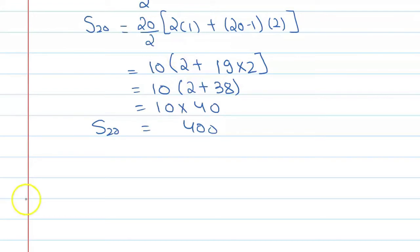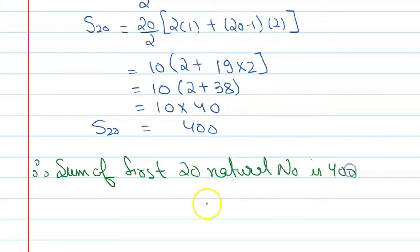Here we can find our answer is 400. Therefore, sum of first 20 odd numbers is 400 and the correct option is C.